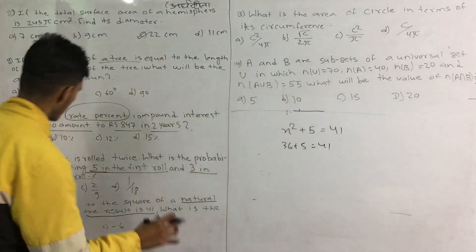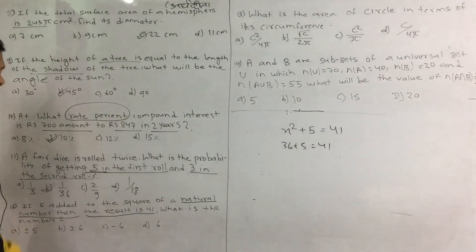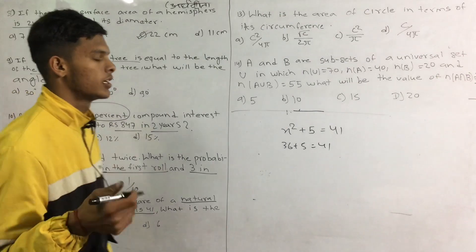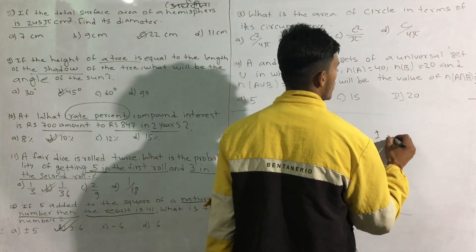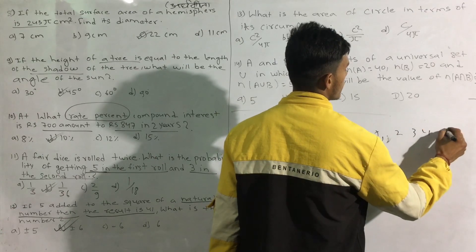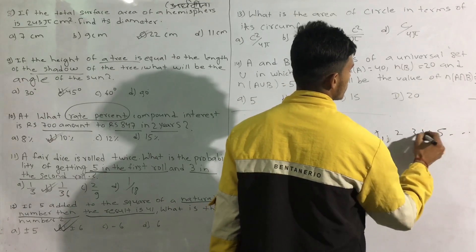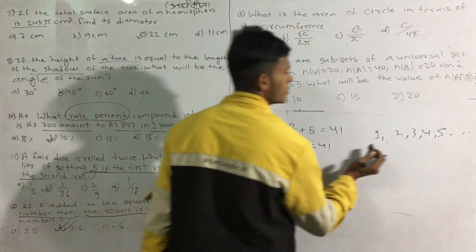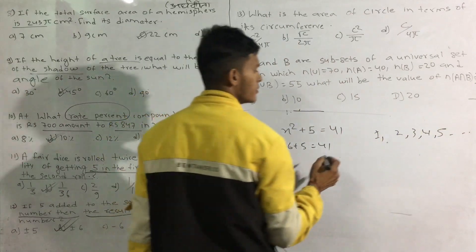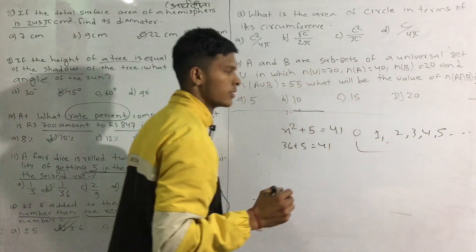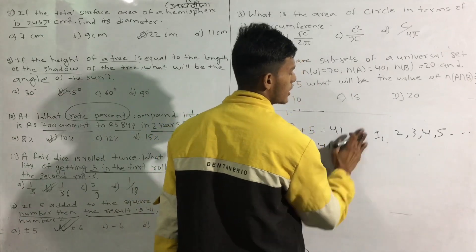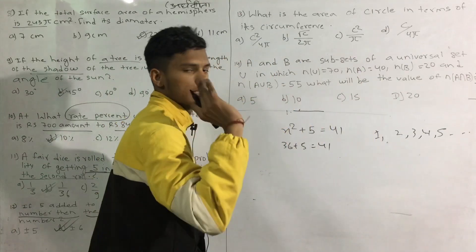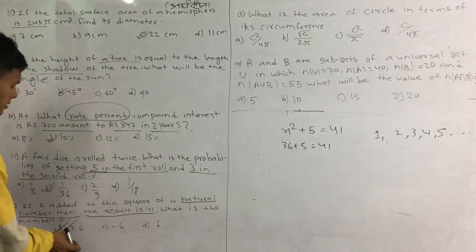So if you have a natural number, you can check: the natural numbers are 1, 2, 3, 4, 5, 6. You can add and verify. The natural number here is 6. Since we need a positive natural number, the answer is plus 6; we consider the positive value since it must be a natural number.